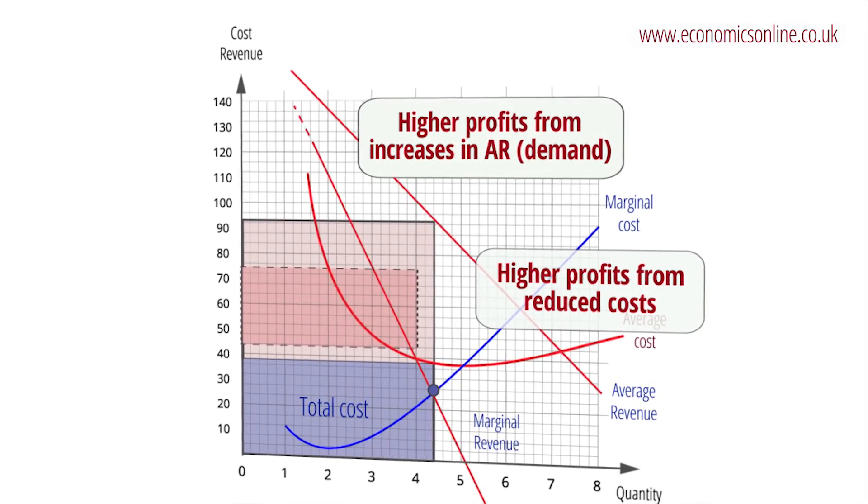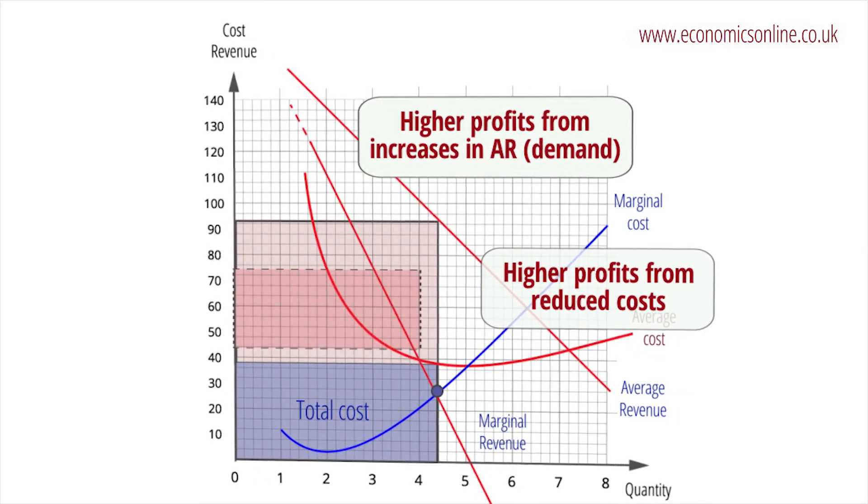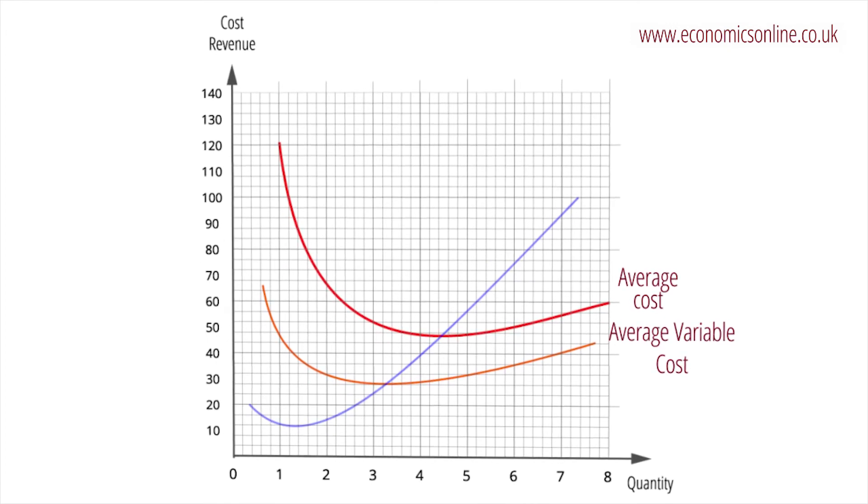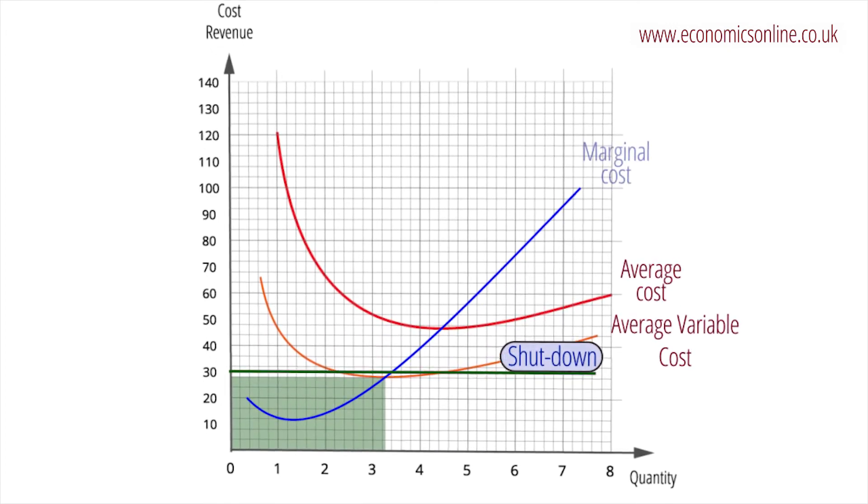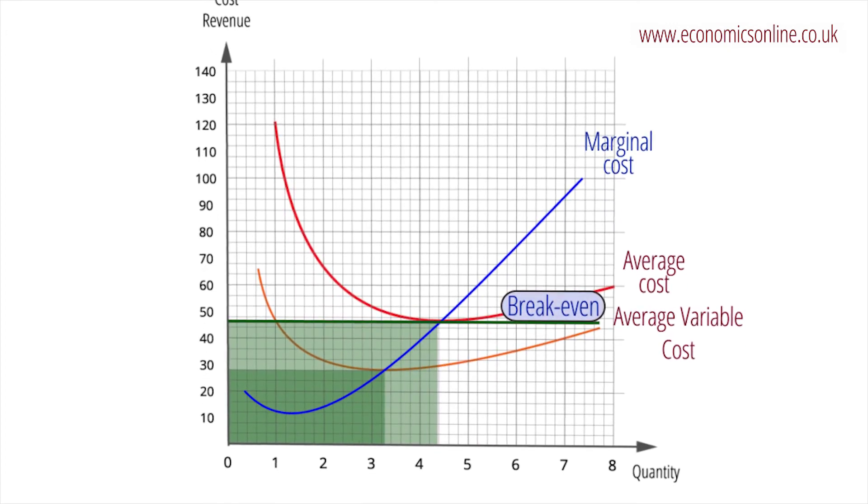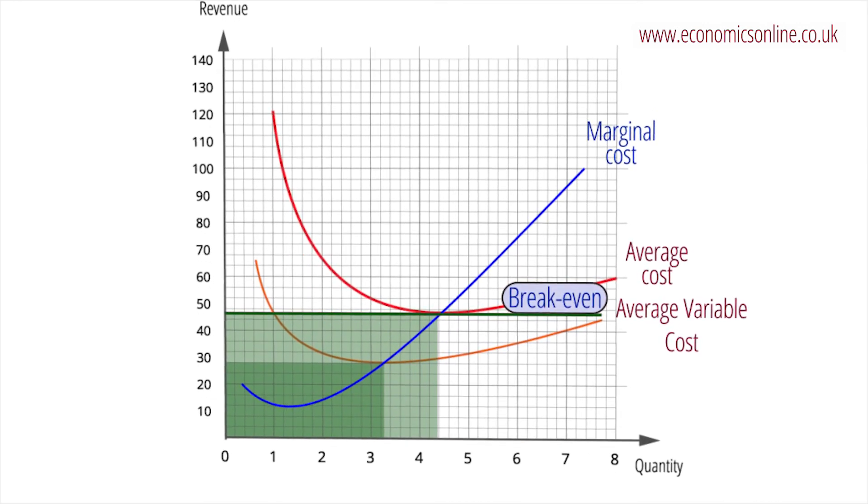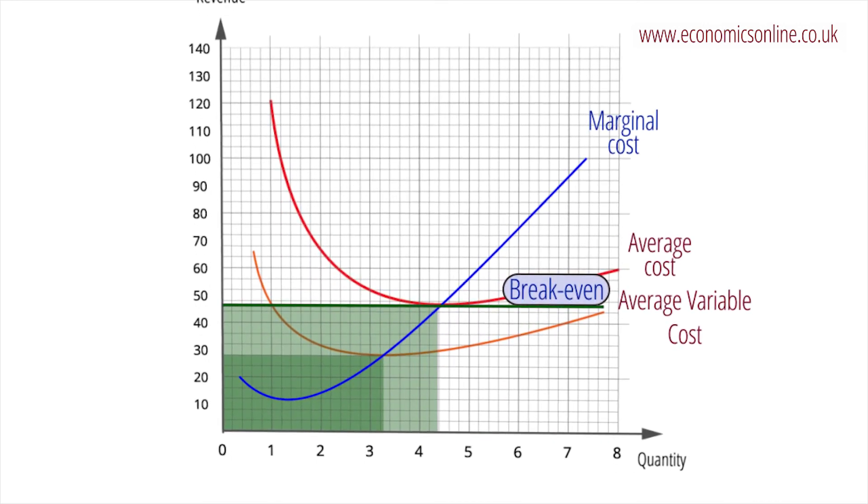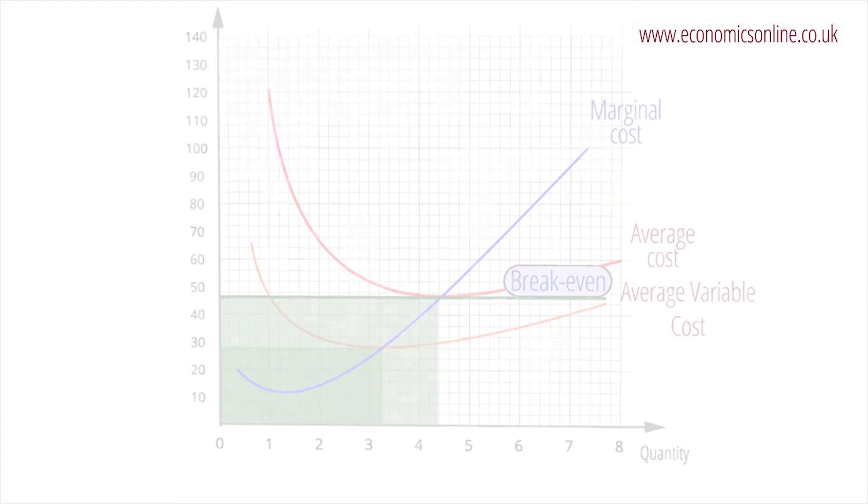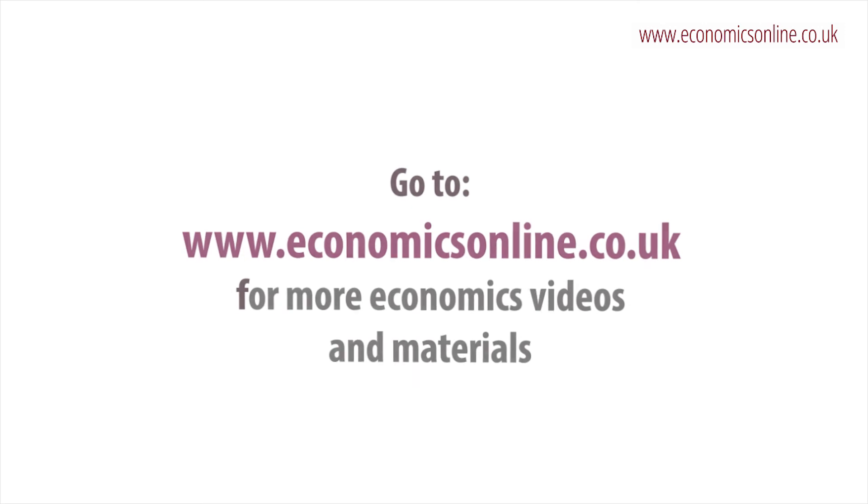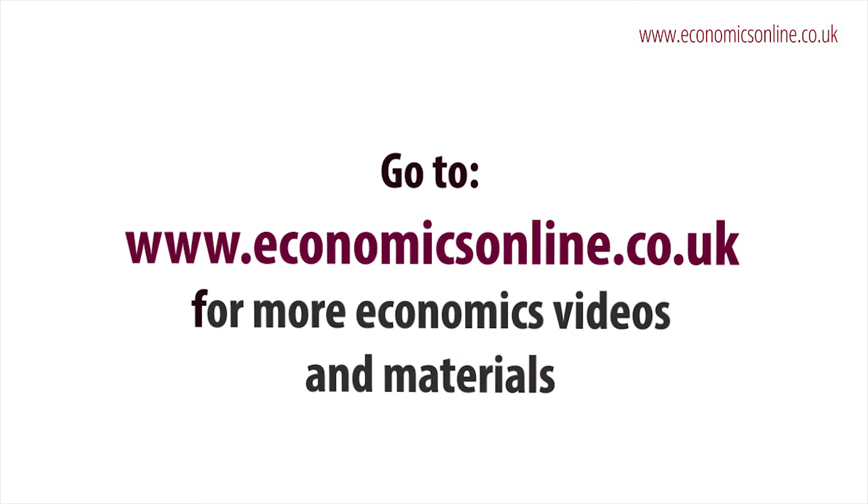Finally, a firm will shut down when revenue drops below average variable cost and will break even when revenue covers all average costs. Hence, a knowledge of costs and revenue is an essential starting point for understanding the behaviour of firms as they try to maximise profits. To see more videos, go to www.economicsonline.co.uk